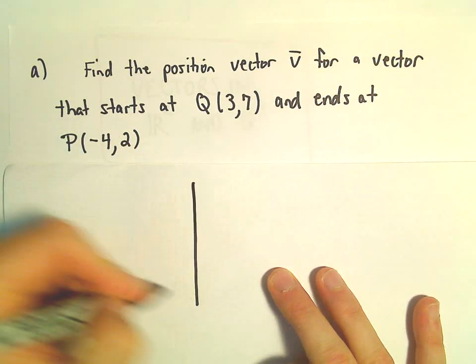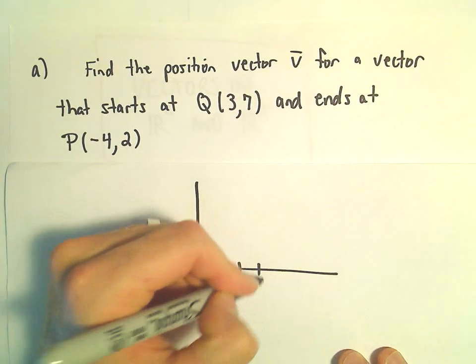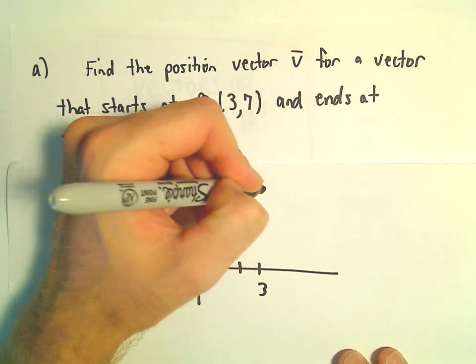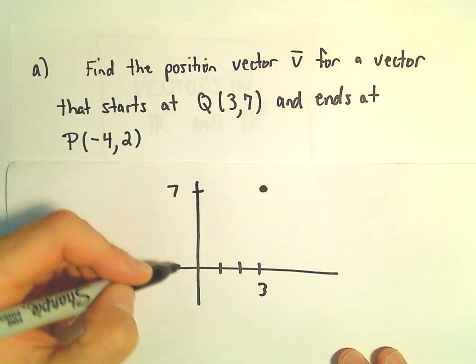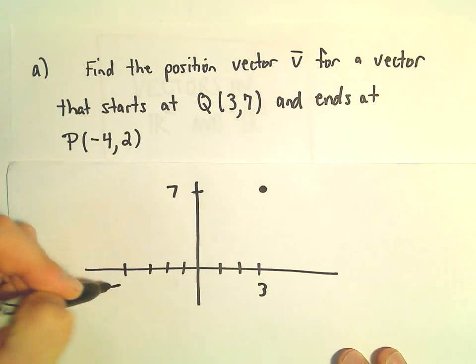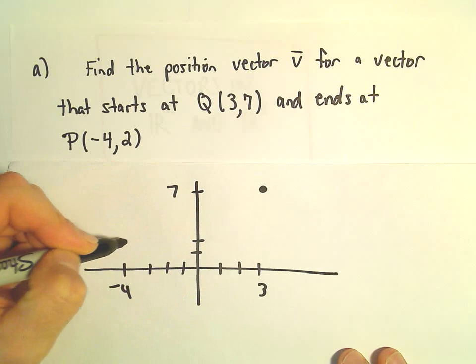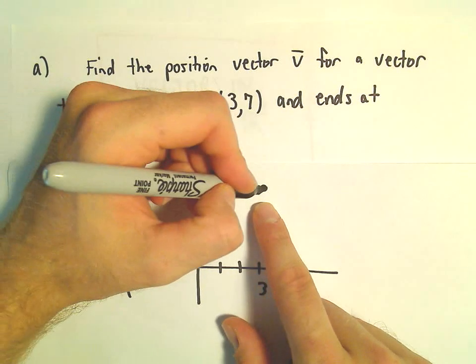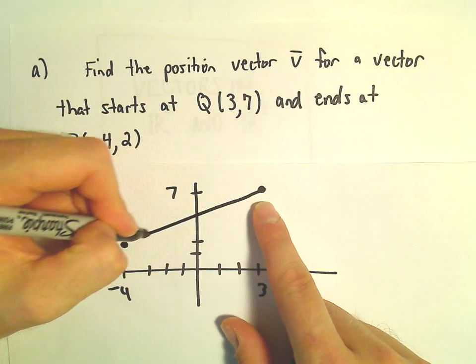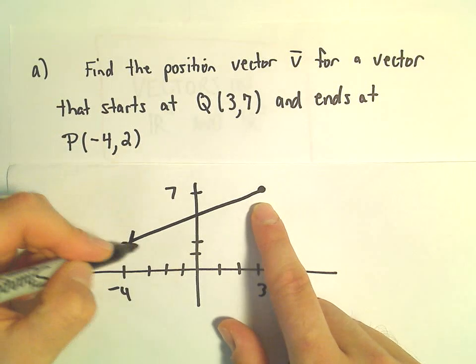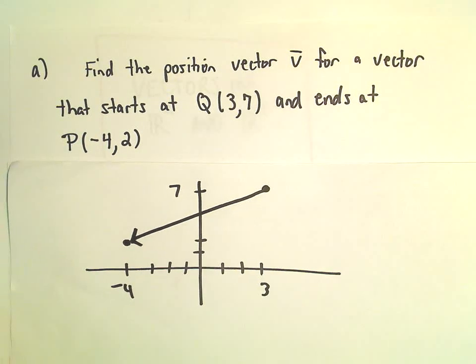So to find this position vector, again, we start at (3,7). You don't have to draw the picture at all, but I'm going to. It starts at (3,7) and goes to the point (-4,2). So this is what our vector would look like if we were to draw it.